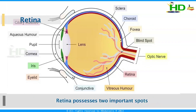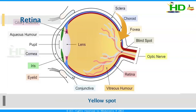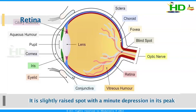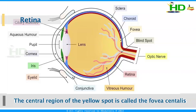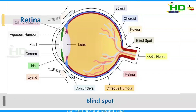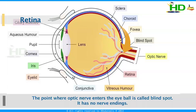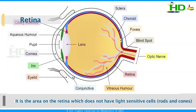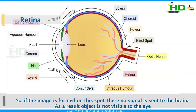The retina has two important spots. One is the yellow spot, situated at the center of the retina. It is a slightly raised spot and is yellow in color and more sensitive to light. The central region of the yellow spot is called the fovea centralis. The blind spot is the point where the optic nerve enters the eyeball. It has no nerve endings and is the area on the retina which does not have sensitive cells — rods and cones. So if the image is formed on this part, there is no signal sent to the brain and the object is not visible.